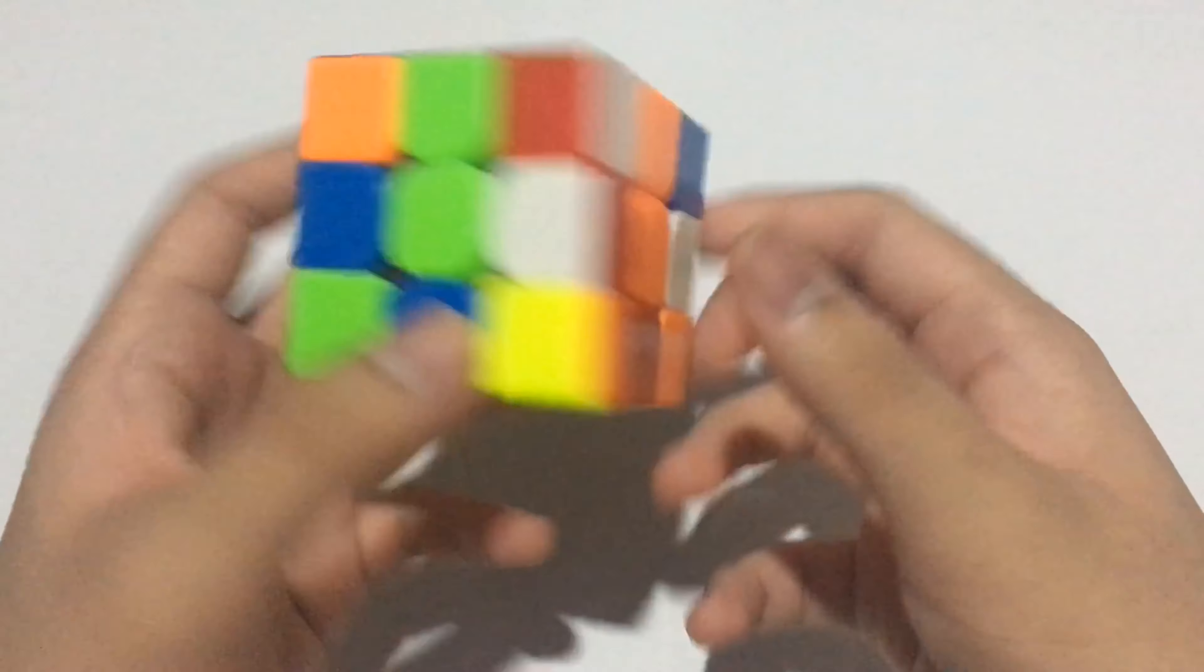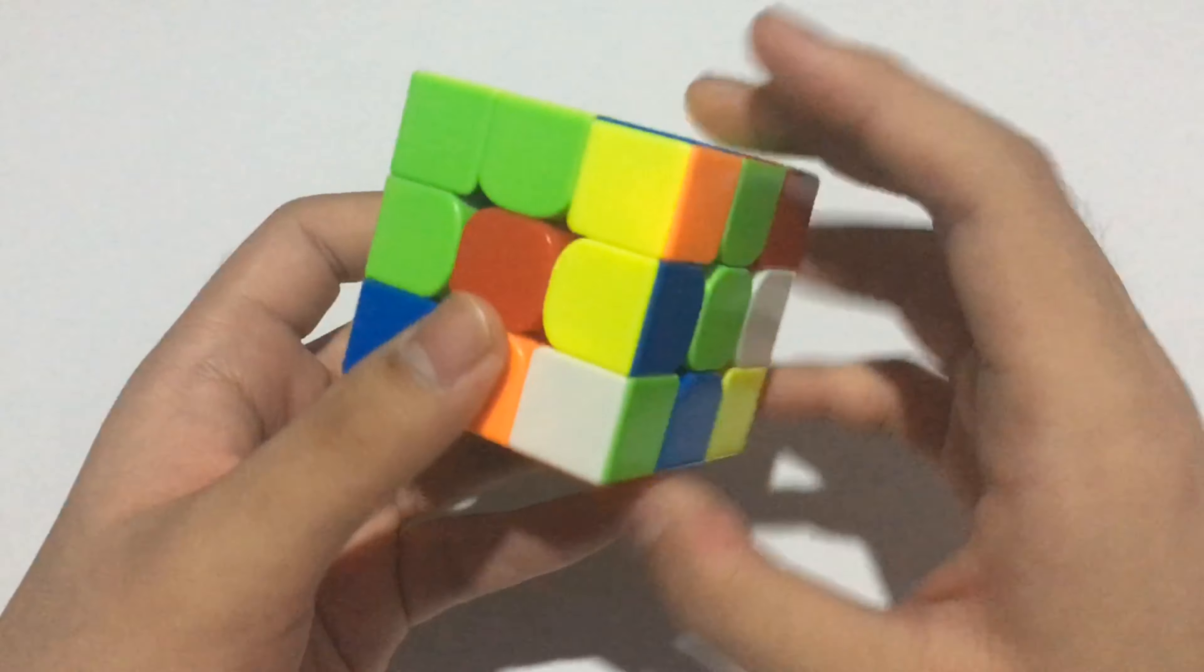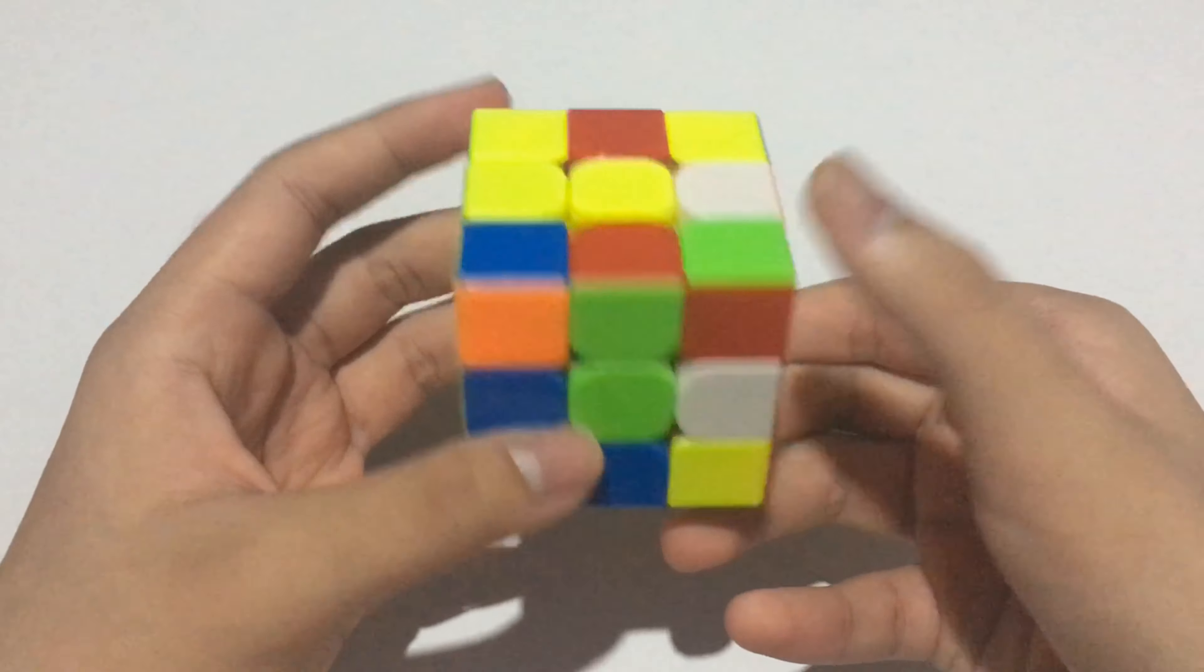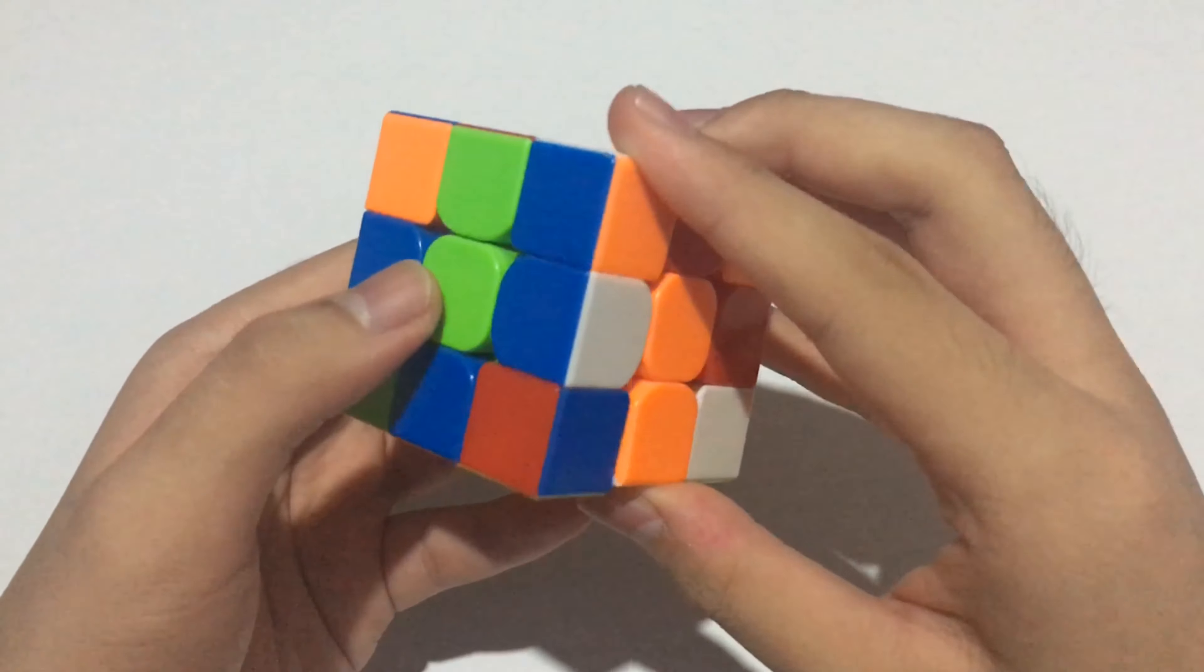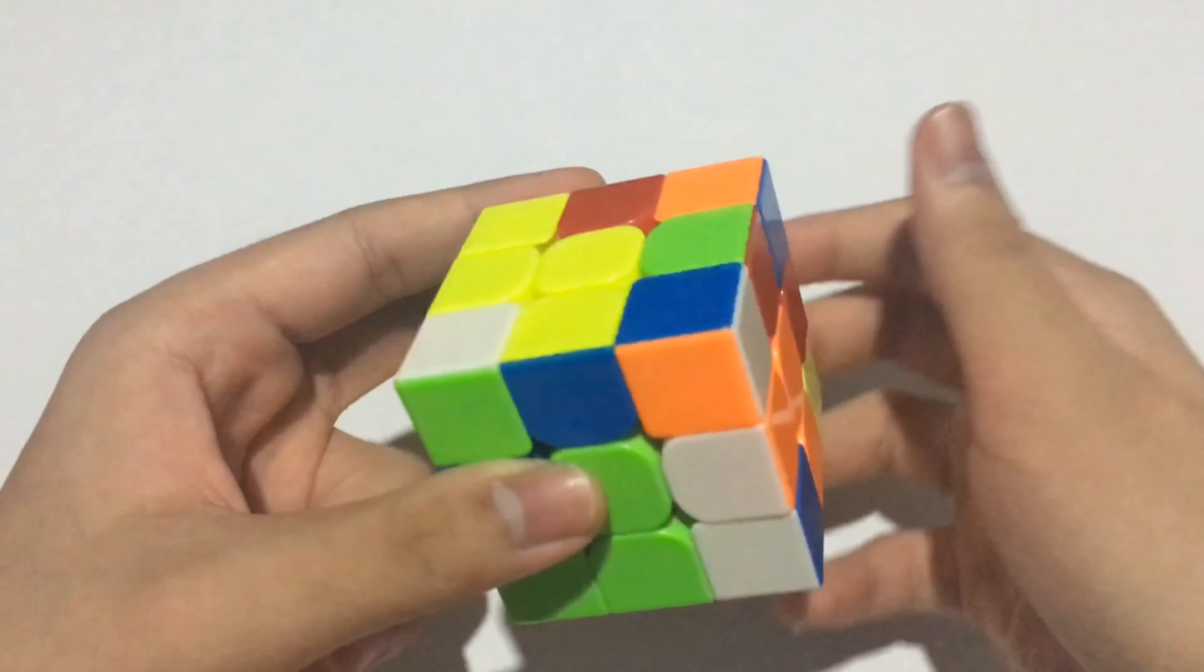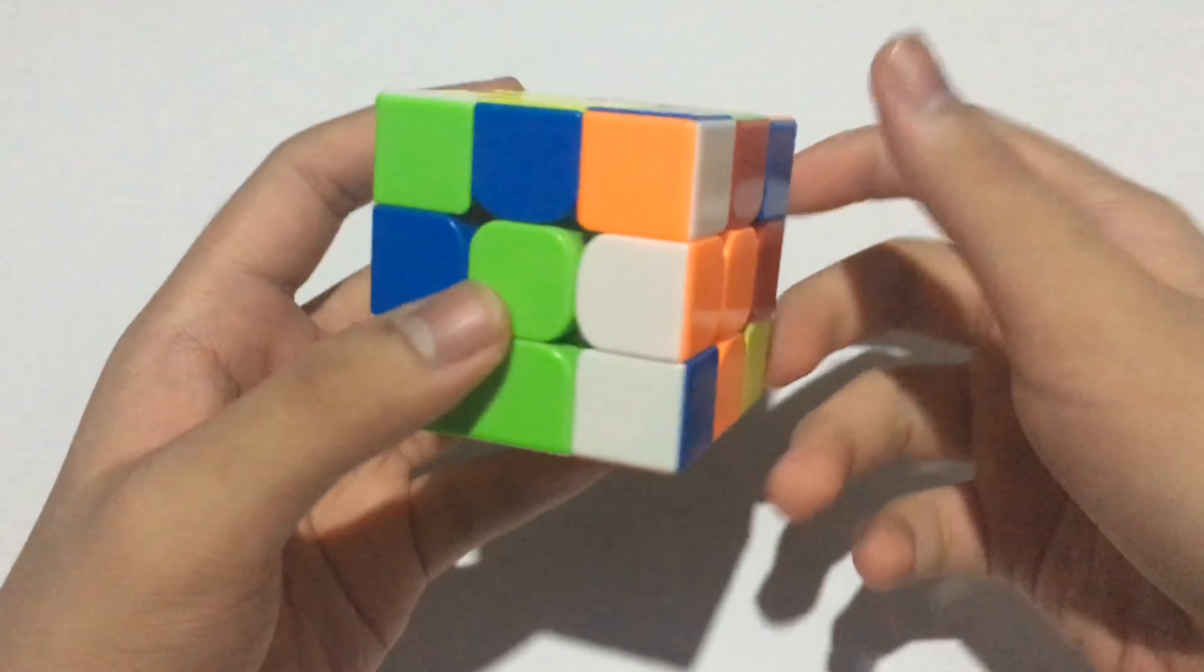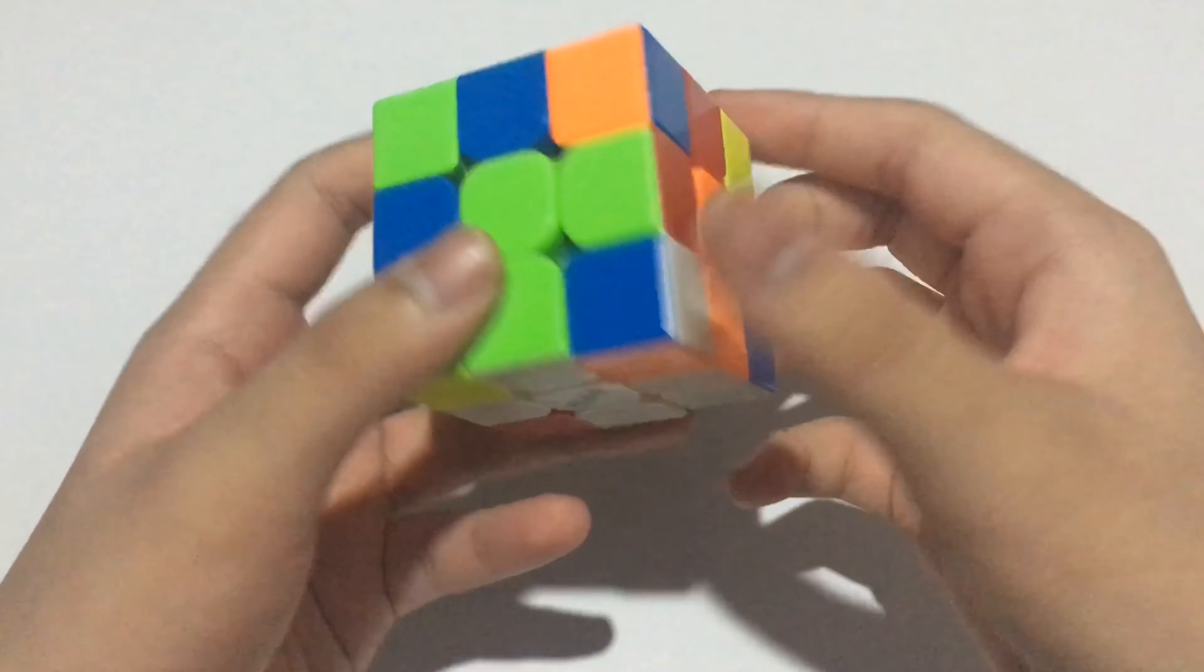What I did was, and by the way, my first pair was this. So what I did was, solved this red and blue cross edge first, D2, now they are all aligned, and solved this orange and white.